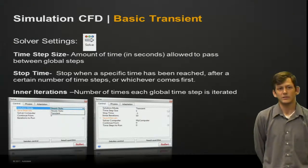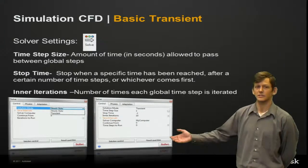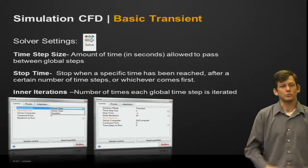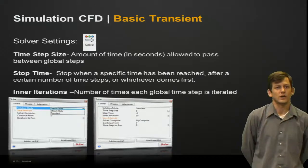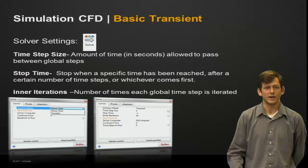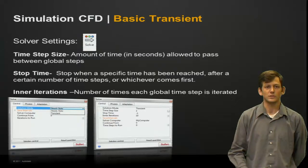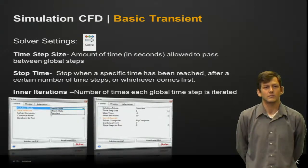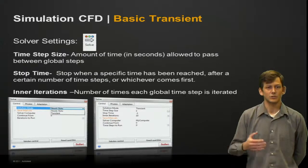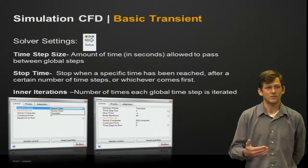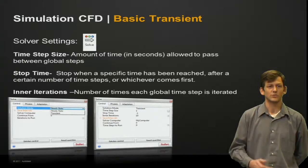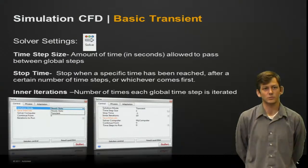With inner iterations, this is the number of times we perform each global time step. By default, we have that set to a value of 10, and typically we can use a value somewhere between 5 and 10. This allows us to calculate each global time step a few times to make sure that we have the best possible solution before progressing on to the next global time step.